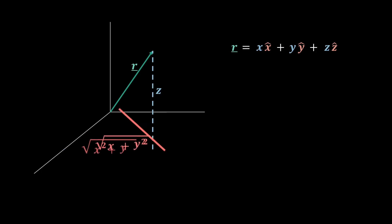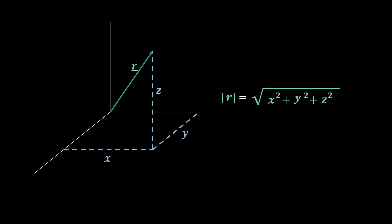Using this result, and forming another right angle triangle with the z component, we can see here that the magnitude of r will be the square root of x squared plus y squared plus z squared,